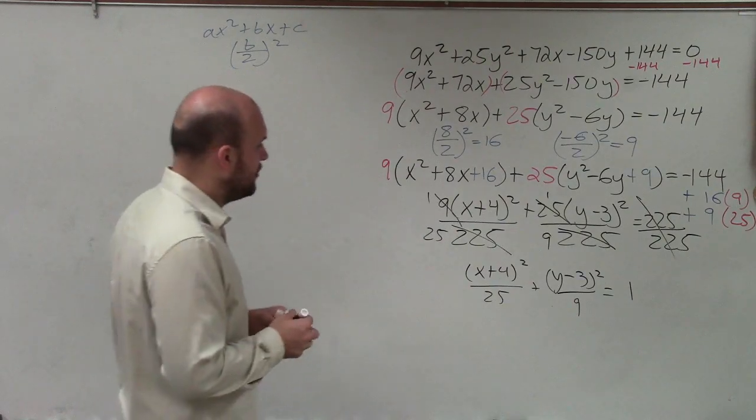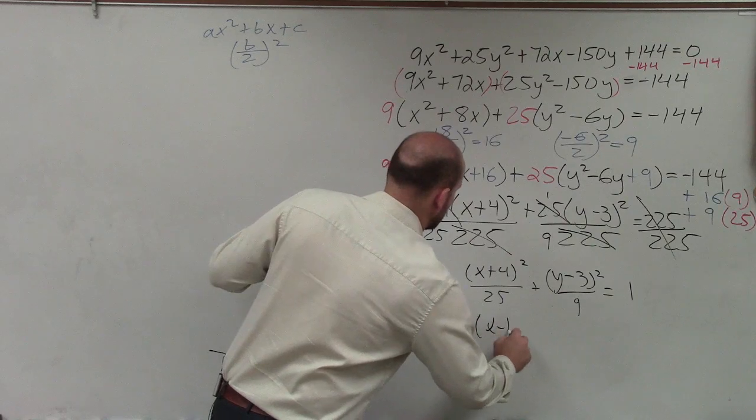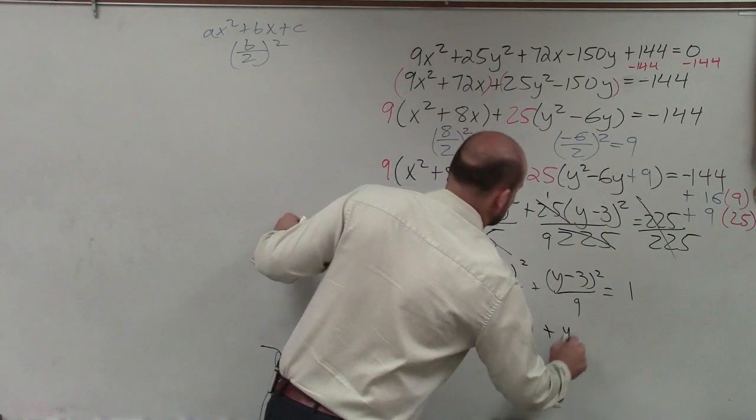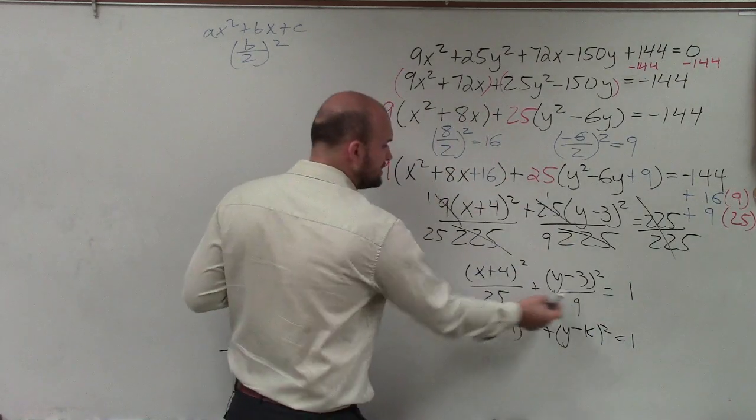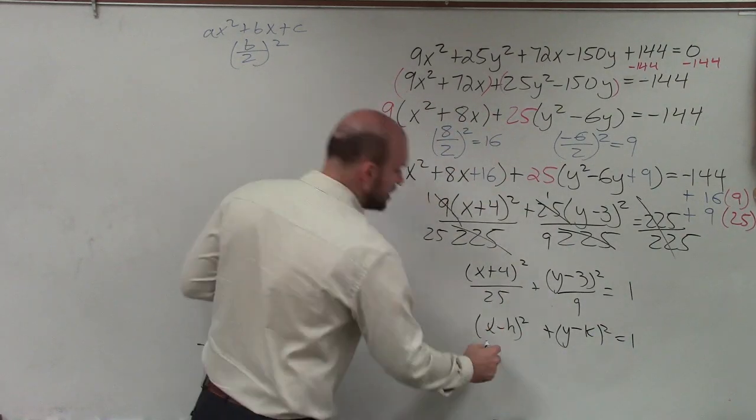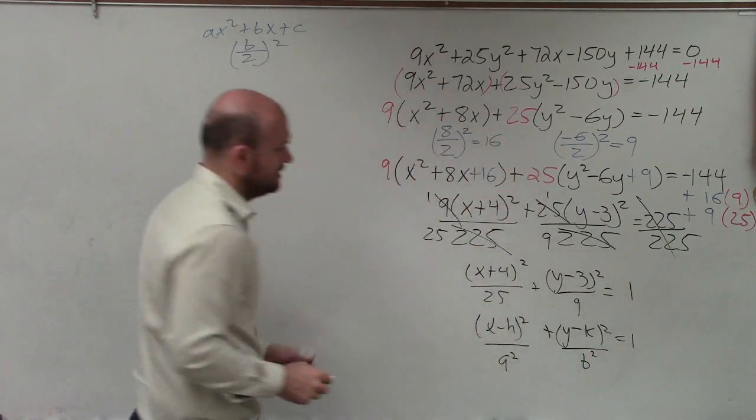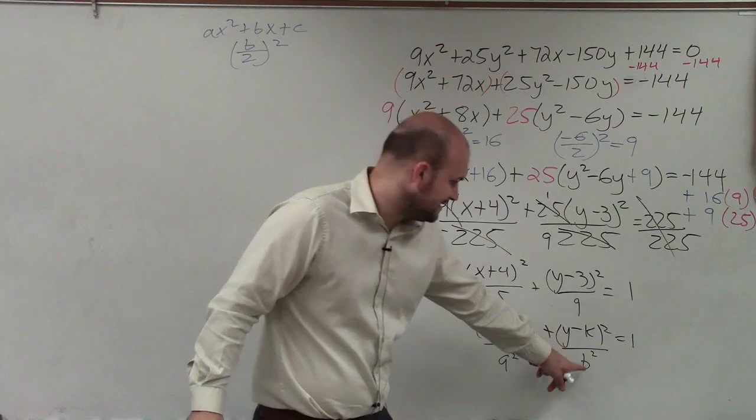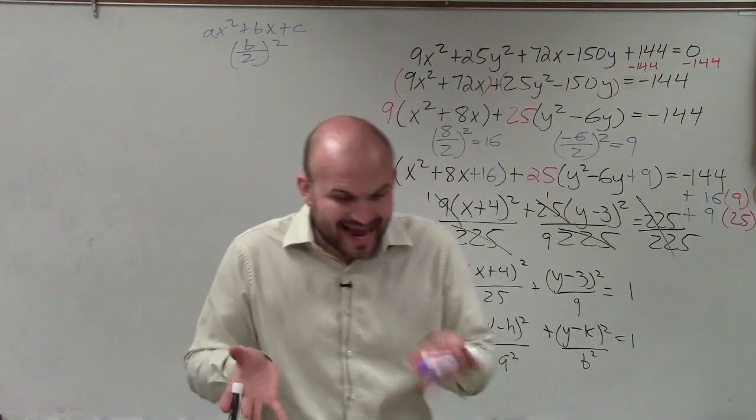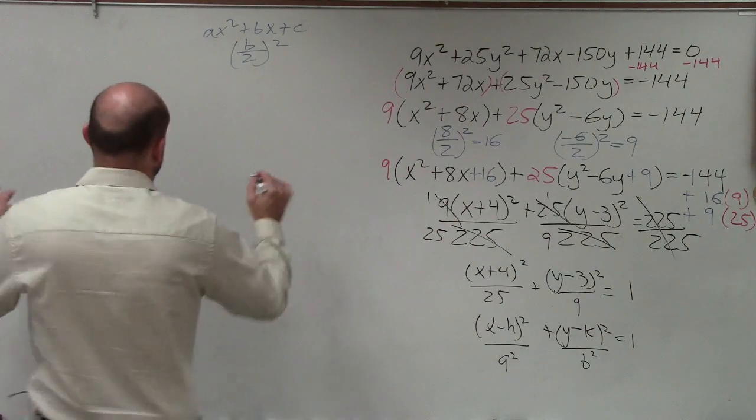One thing I notice is our standard form of our equation is (x - h)² plus (y - k)² equals 1. Now depending on what is your larger number, the larger number is always going to be your a² for an ellipse. Since 25 is larger than 9, I can say that a² is going to be under the x, and the b² is under the y. And when the a² is under the x, that means I have a horizontal major axis of symmetry.